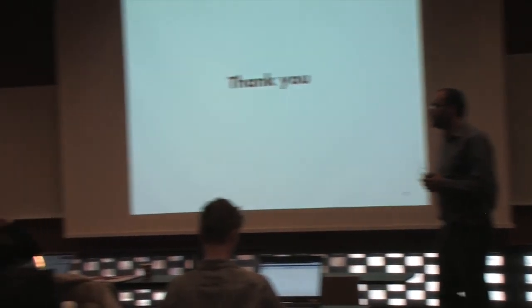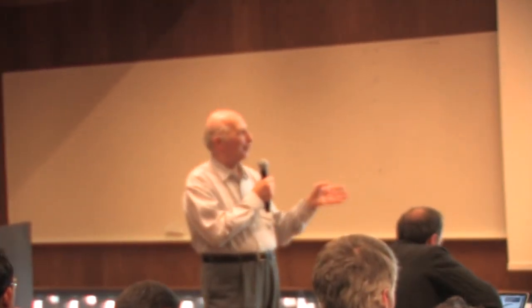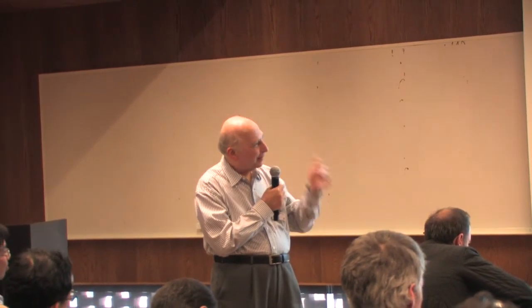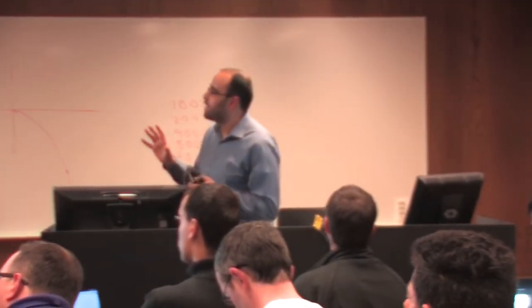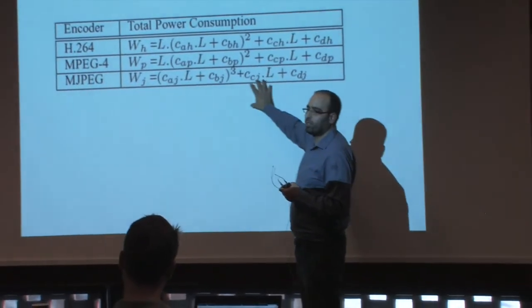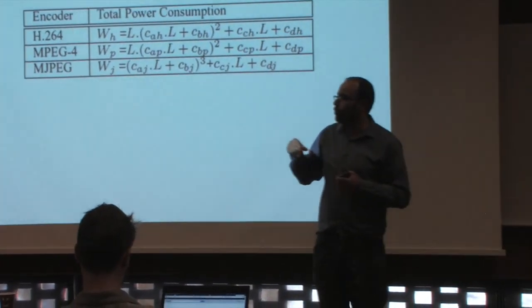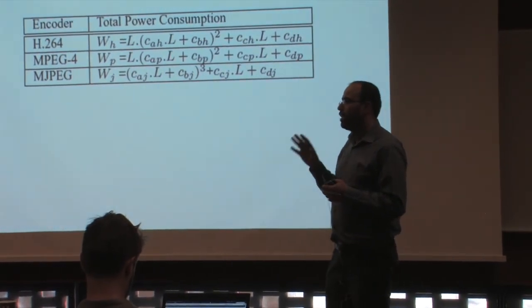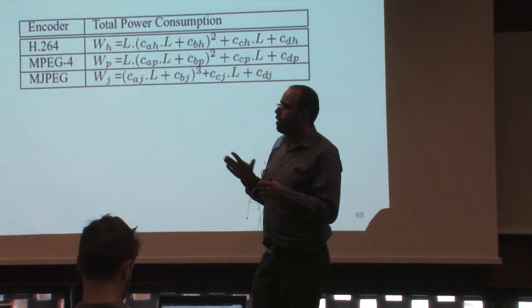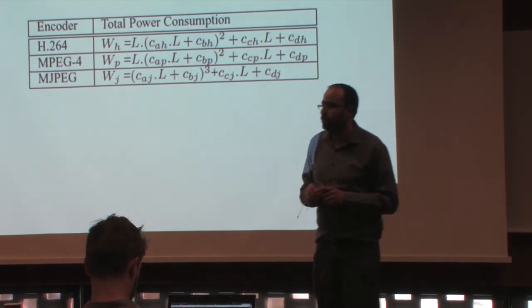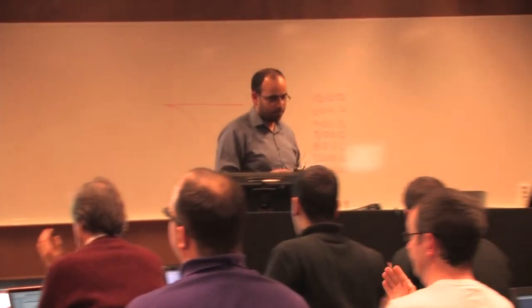Is there a possibility to simplify the model, since it's quite complicated, given that the conclusions show some simple rules? Yes, what we did in this paper was to make things as simple as possible. At the end we have these models — a table showing the different models for different types of encoders and the total power consumption. One audience member asked: did you consider MPEG-2, since many cameras still use it? We only focused on X264 but included MPEG-4 and MJPEG for comparative purposes.